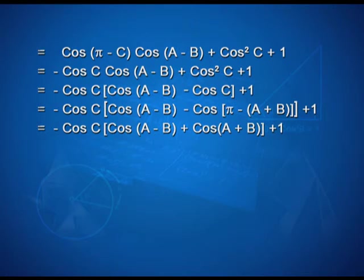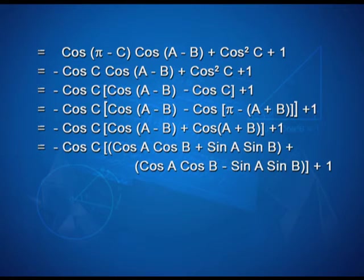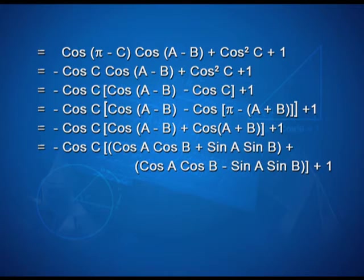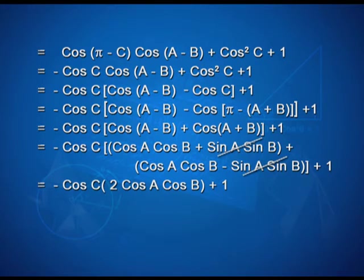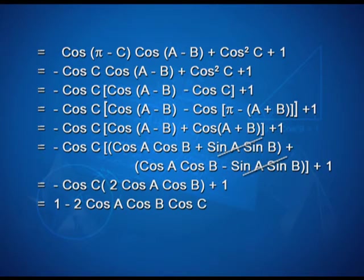On opening the brackets, we use the identity to write minus cos C [cos A cos B plus sin A sin B plus cos A cos B minus sin A sin B] plus 1. The sin A sin B terms cancel, leaving minus cos C times 2 cos A cos B plus 1, which equals 1 minus 2 cos A cos B cos C. That equals the RHS, hence proved.